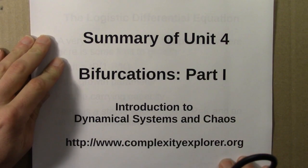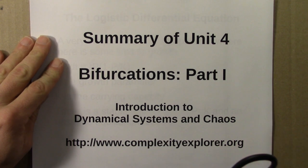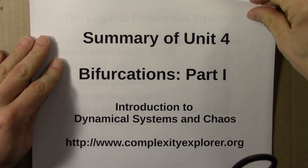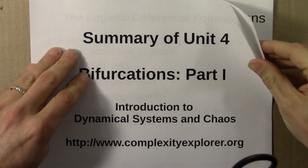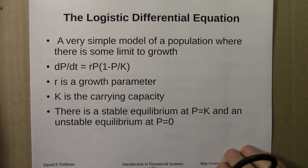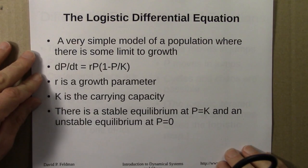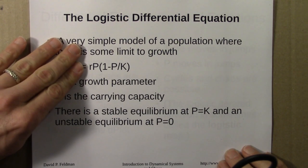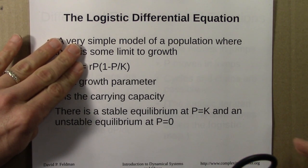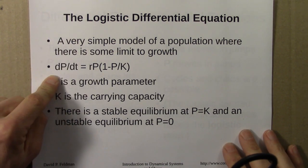Let's summarize unit 4, which was the first of two units on bifurcations. I began by looking at the logistic differential equation. It looks very similar on the right-hand side to the logistic equation that we iterated, but this is a differential equation.